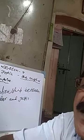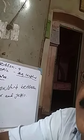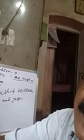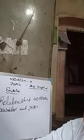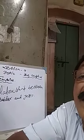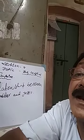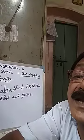Mansabdars were nobles or rank holders. Instead of being paid salaries directly, they were given the right to collect revenue from land granted to them. These lands were called Zagir. Mansabdars were the nobles and rank holders who were paid through the revenue collected from their assigned Zagir lands.